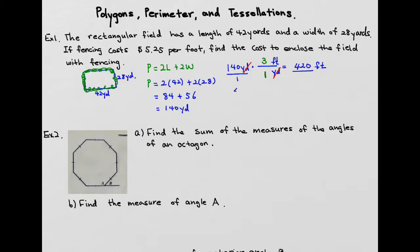And we're going to multiply that into the price $5.25, which you get $2,205. So this is how much you need to spend to buy your fencing.